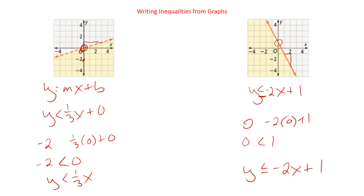So from graphs, we can write inequalities — which is basically the same as writing an equation from a graph. We need our slope and our y-intercept. We just also need to think about whether it's an 'or equal to' or not, and which way the sign is pointing.